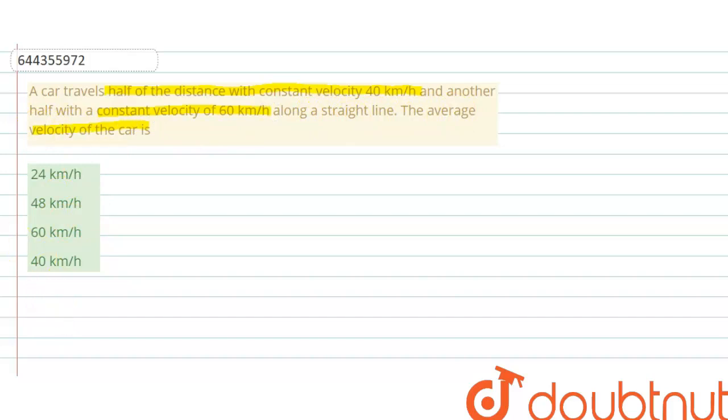Okay, so here is the situation. Let's say this is the total distance and half of the total distance is traveled by velocity 40 km per hour. So let's divide this total distance in two parts, and this is half x and this is x. Total distance is 2x. So this half distance x...